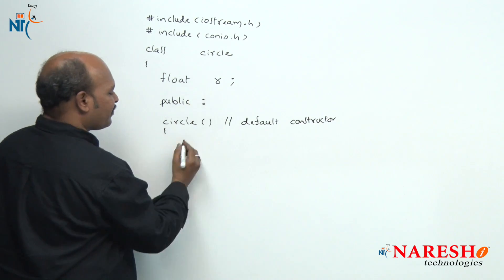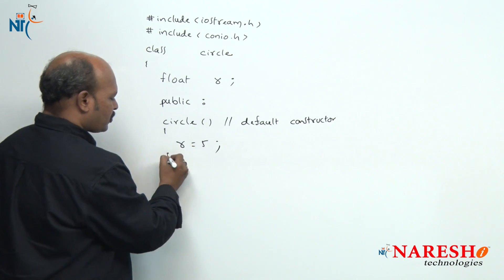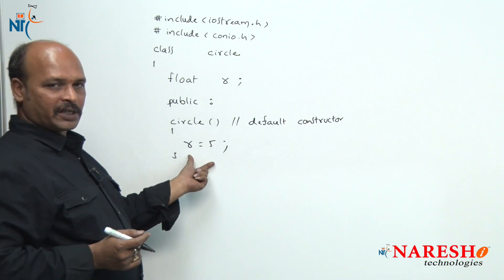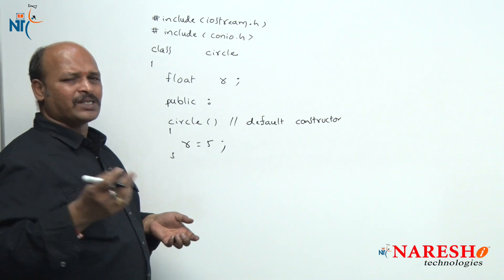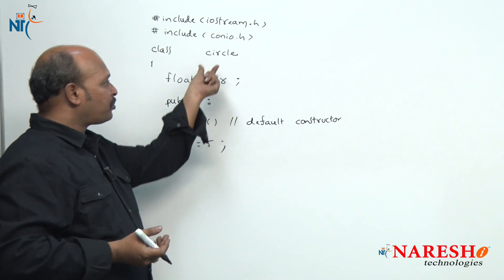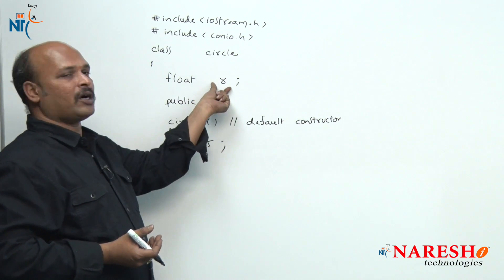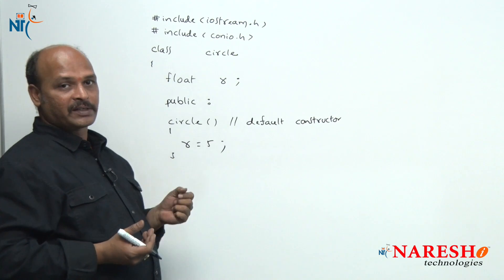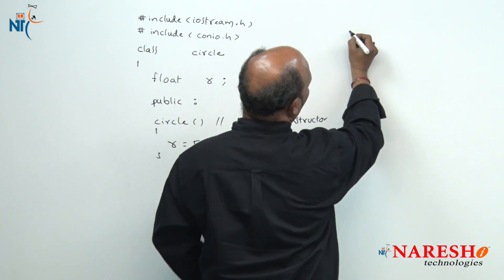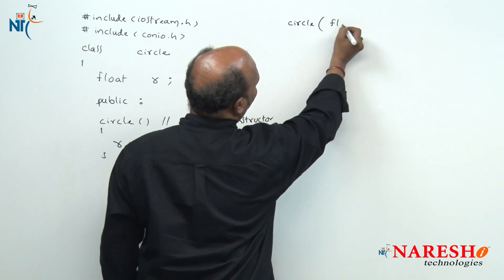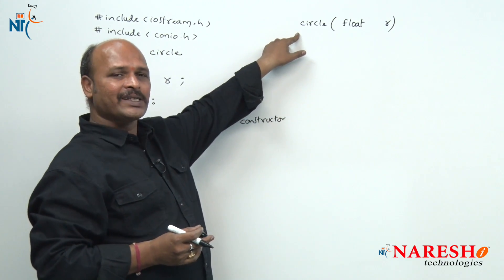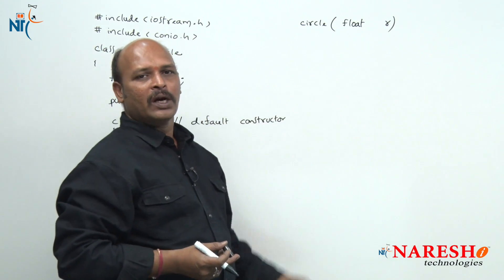In the default constructor body, I assign R equal to 5. So when an object is created, R is automatically initialized to 5. That is why constructors are used for automatic initialization of objects. Next, I define a parameterized constructor: Circle(float R). Here the class name is Circle and the function name is Circle, so it is a constructor — but now it has an argument, making it a parameterized constructor.